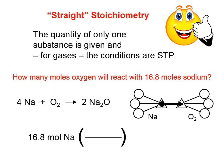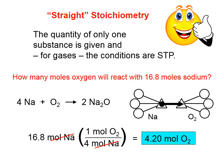We need to write a balanced equation: sodium reacting with oxygen. The only real option is a synthesis reaction, giving product Na₂O. When balanced, we get 4 Na + O₂ → 2 Na₂O. To cross the middle bridge, we use those coefficients. Starting with 16.8 moles of sodium, we place moles of sodium in the denominator with a coefficient of 4 (from Na in the equation), and moles of oxygen in the numerator with a coefficient of 1. Moles of Na cancel: 16.8 divided by 4 gives 4.2 moles of oxygen.